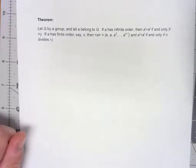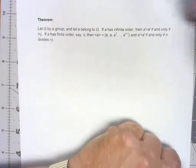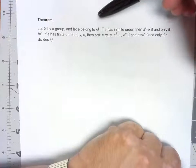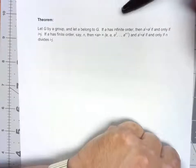Let's look at a really important theorem in terms of cyclic groups. Let G be a group and let A be some element of G. There's actually sort of two parts to this theorem.